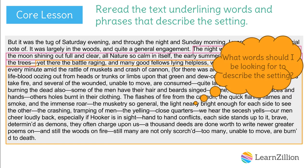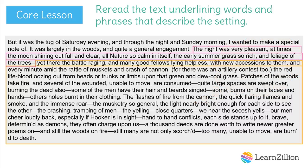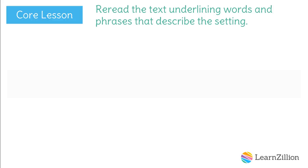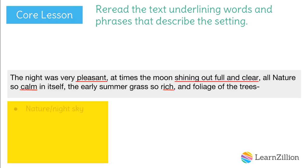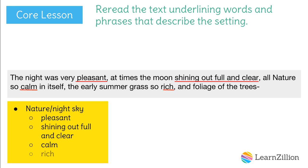Looking for all types of descriptive words and phrases would be a great start. I'm going to start by looking at the description of nature and the night sky. The night was very pleasant, at times the moon shining out full and clear, all nature so calm in itself, the early summer grass so rich, and foliage of the trees. So the words and phrases that describe nature and the night sky are: pleasant, shining out full and clear, calm, and rich.